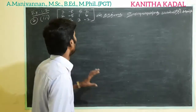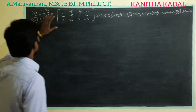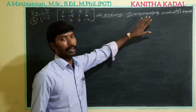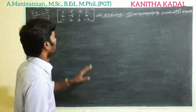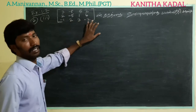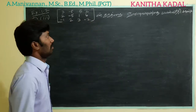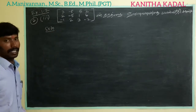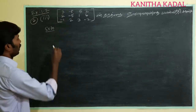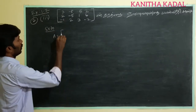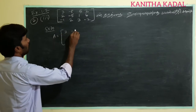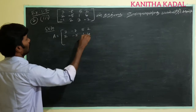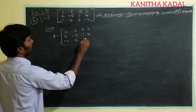Hello everyone. I'm going to take a look at a 3 by 4 matrix. The name of this matrix is A, and A is equal to: 3, minus 8, 5, 2, 2, minus 5, 1, 4, minus 1, 2, 3, minus 2.